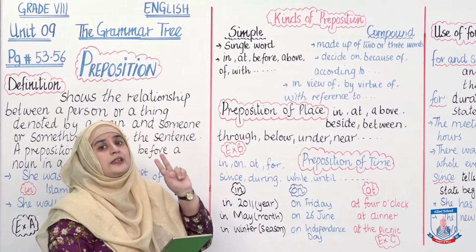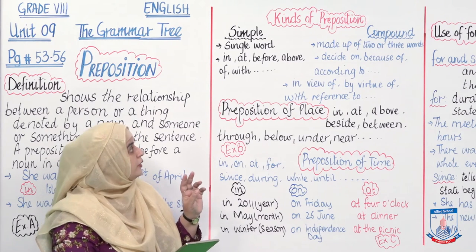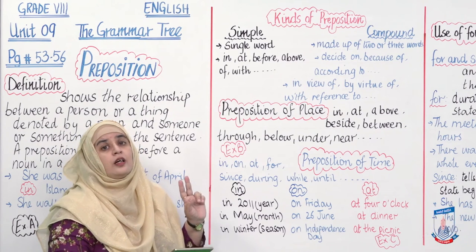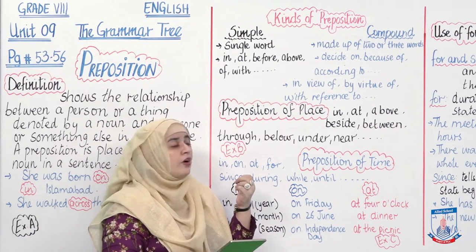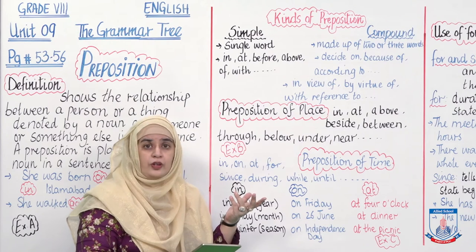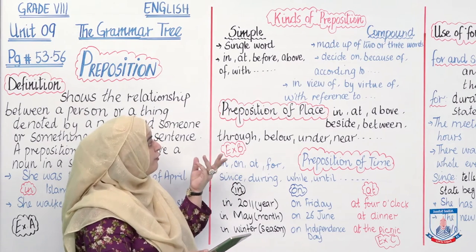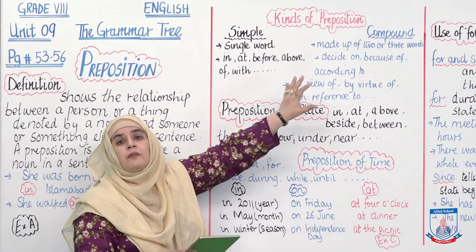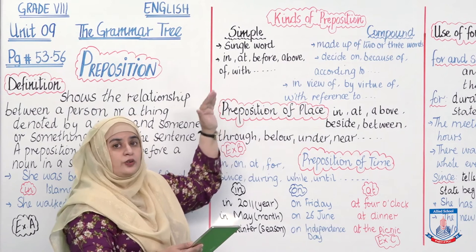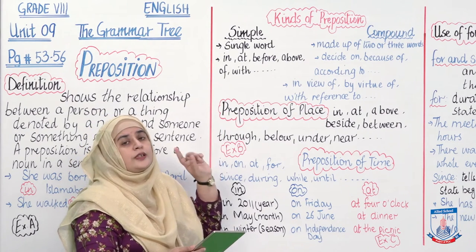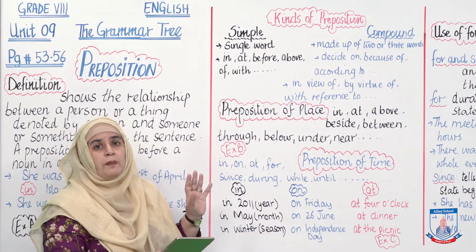Compound prepositions kaun si hoti hain? Jo do ya do se zyada words ki bani hoti hain — teen maximum. For two-word compound prepositions, examples are: decide on, because of, according to. And for three-word prepositions: in view of, by virtue of, with reference to. Ye basically prepositional phrases hoti hain, lekin inko hum baad mein discuss karenge. Let's stick to the simple prepositions first.